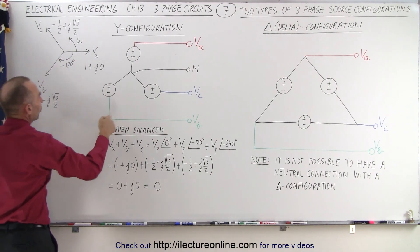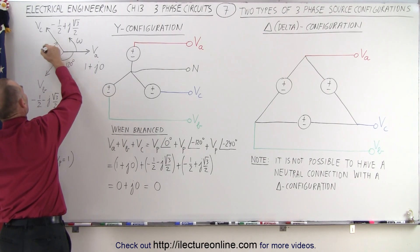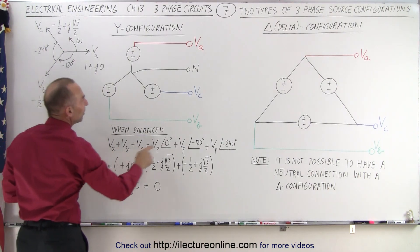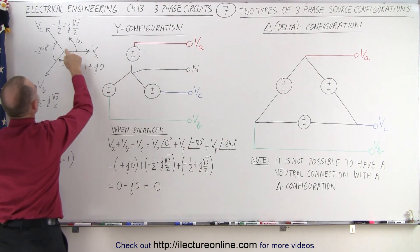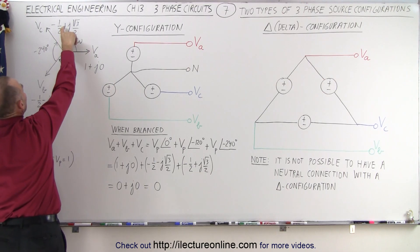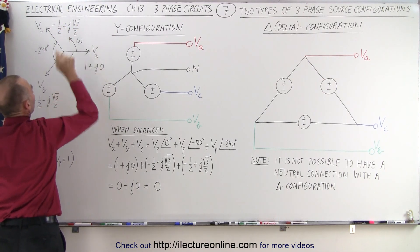Then if we go to the third phase, we go back another 120 degrees, minus 240 all together. Then notice that V-C will have a real part of minus one-half, and an imaginary part of plus square root of 3 over 2.